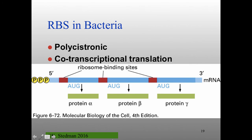In bacteria, because there's no nucleus, as you are making your messenger RNA, as soon as that ribosome binding site comes off of the RNA polymerase, the ribosomes can associate with it — so you have transcription and translation happening simultaneously in bacteria. This is not the case in eukaryotes. Why? You've got a nucleus — all transcription is happening in the nucleus, translation is happening out in the cytoplasm, so it can't be happening co-transcriptionally.